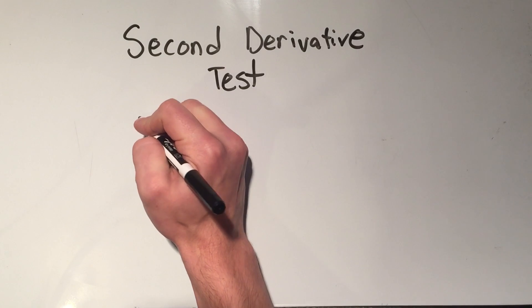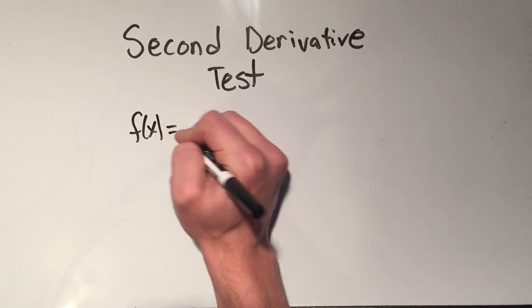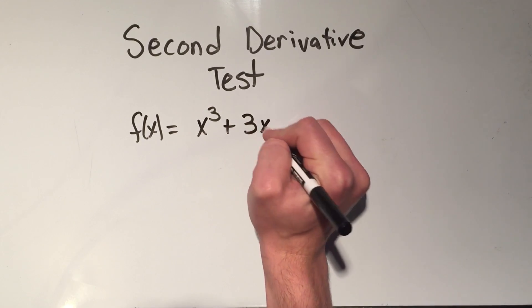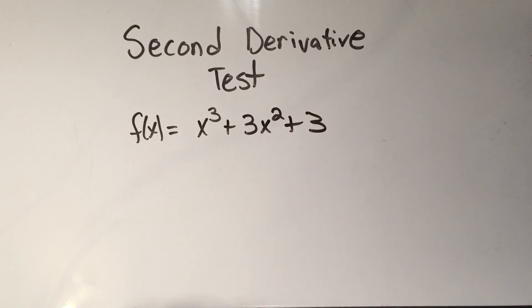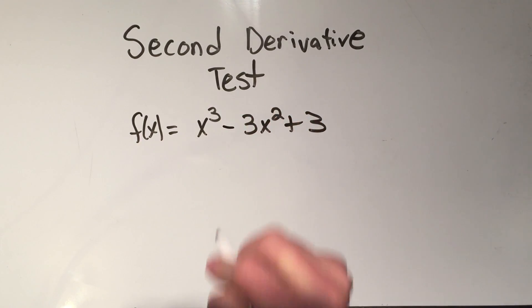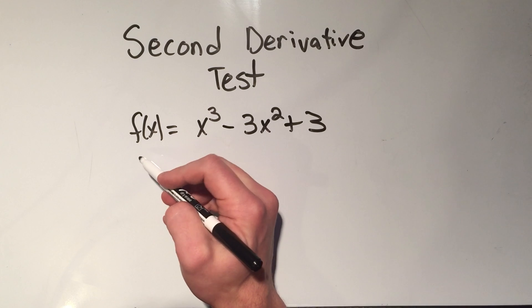So my function is x cubed plus 3x squared plus 3. Oh, sorry, I think that function I wanted to use, I wanted to use minus. Yeah, that's what I'm going to use. So now I want to find and classify all critical points. So basically, I want to know whether my critical points give me maximums or minimums using the second derivative test.